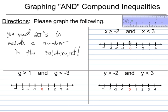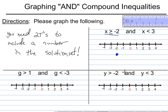Let's graph these compound inequalities — they're joined by AND. The first one is x is greater than or equal to negative 2, and x is less than 3. I'll do the first one in blue below the number line. X is greater than or equal to negative 2, so it's a solid dot, and then an arrow that goes to the right.